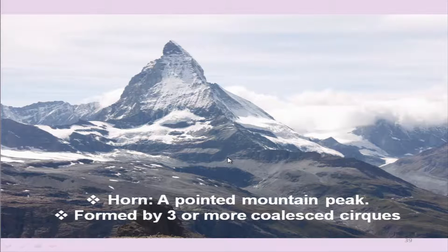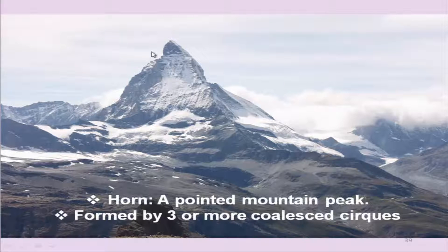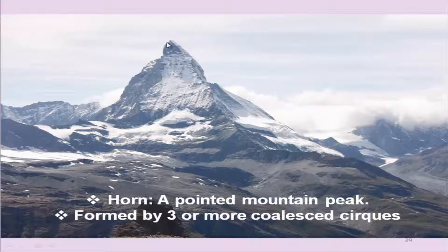Coming to another feature — a horn — which is formed by three or more coalescing cirques. You have one cirque, another cirque here, and a third at the back side. If you combine three cirques, you have a mountain peak known as a Horn. This photograph is from Switzerland, a glaciated region, and shows the formation of a Horn.